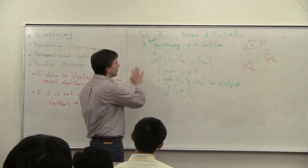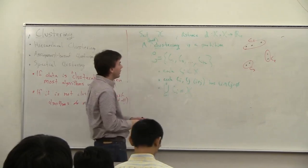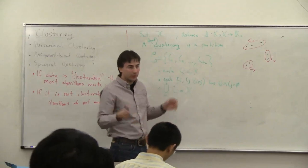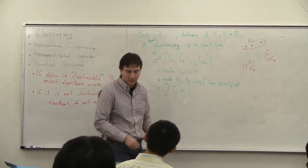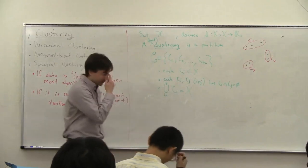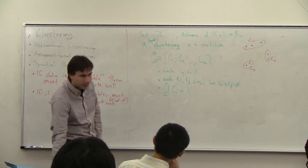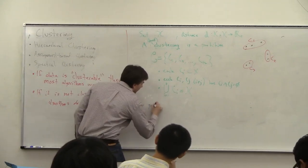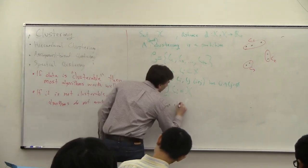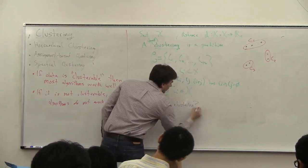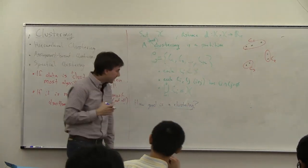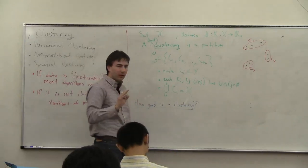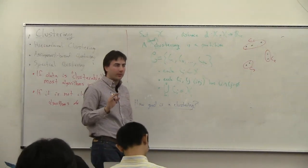Sometimes you know the parameter k — how many sets you want; in this case k was three. In other cases you don't, and you need to figure out how many subsets to use. There are many ways of saying how good a clustering is. In general, there seem to be two sorts of properties you want a good clustering to have.